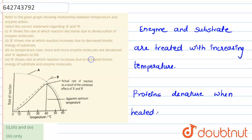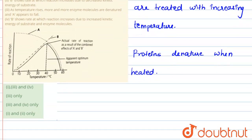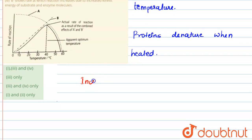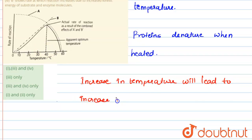At high temperature, when enzymes and substrates are subjected to increasing temperature, two things will happen. First, the kinetic energy of the enzyme and substrate molecules will increase because of high temperature, as increasing temperature leads to increased kinetic energy of the molecules.